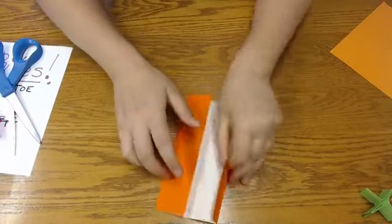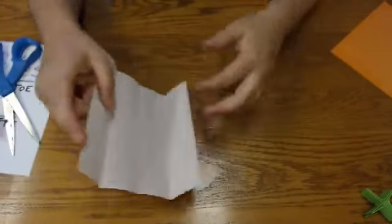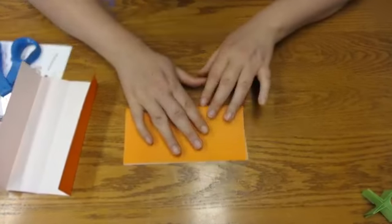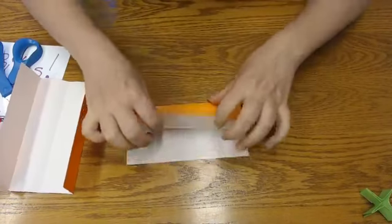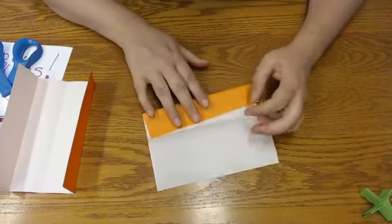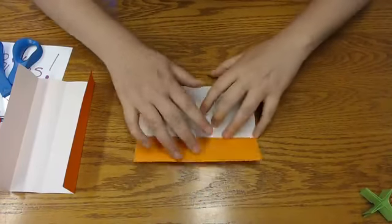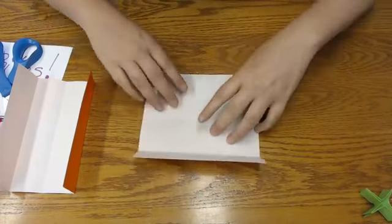There we go. These are going to be long and thin here. Just like that. And you'll do the same thing for a second piece of paper, because again, we're going to be making five X's and five O's for your set of origami tic-tac-toe.